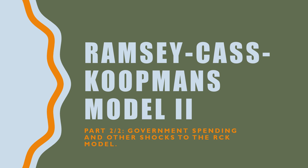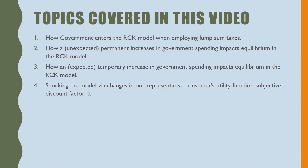What's up guys, Econ John here. In this video we're going to talk more about the Ramsey-Cass-Koopmans models and the diagrams from the last video, and show how government spending affects those models. The topics we'll cover are: one, how government enters the RCK model using lump-sum taxes; two, an unexpected permanent increase in government spending; three, an expected temporary increase in government spending; and four, shocking the model via changes in the representative consumer's subjective discount factor rho.